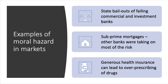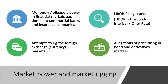You can also see moral hazard in health markets: if you have a very generous health insurance policy, that could lead to your doctor over-prescribing drugs that you don't necessarily need. Another aspect of market failure in the financial sector is market power and market rigging. Market rigging is when some companies in the market act together to stop a market working as it should, in order to give themselves an unfair advantage.